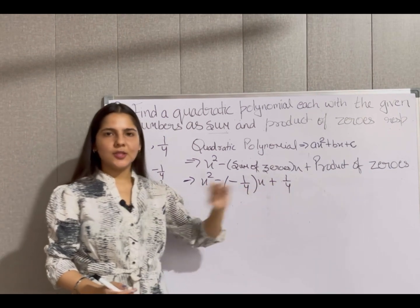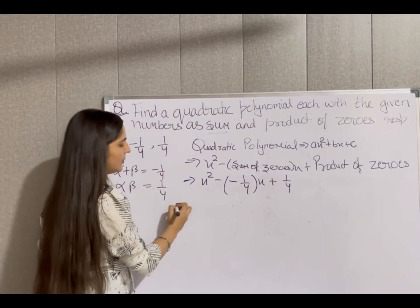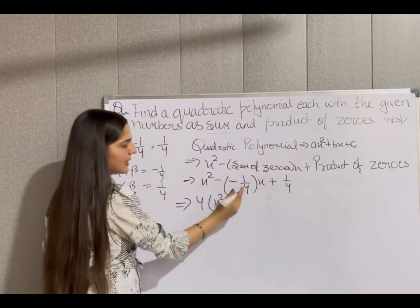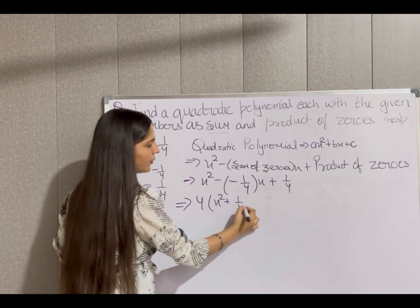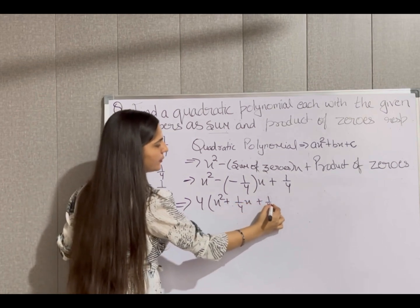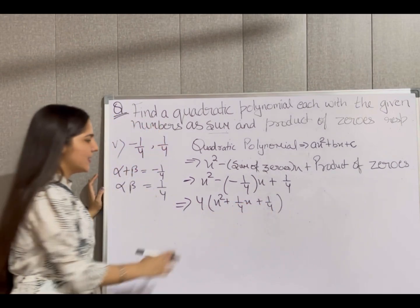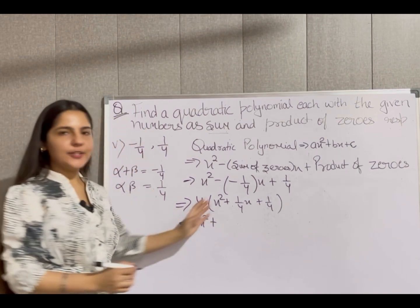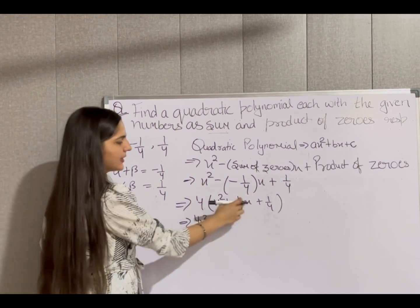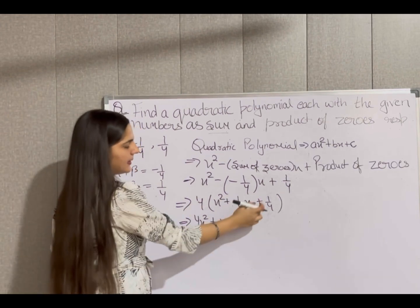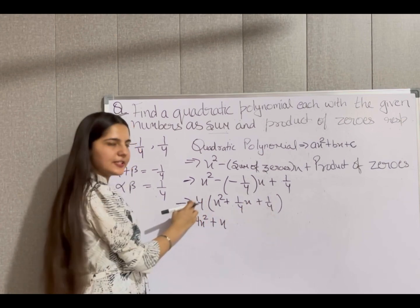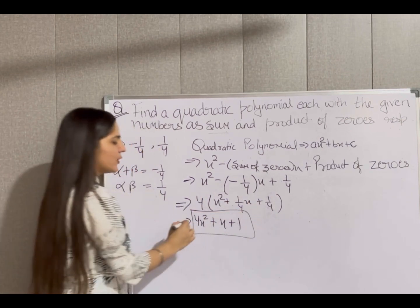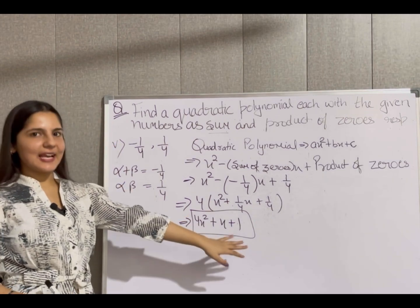The denominator is 4, so LCM is 4. Multiplying through by 4: 4x² + 4×(1/4)x + 4×(1/4) = 4x² + x + 1. So the required quadratic polynomial is 4x² + x + 1.